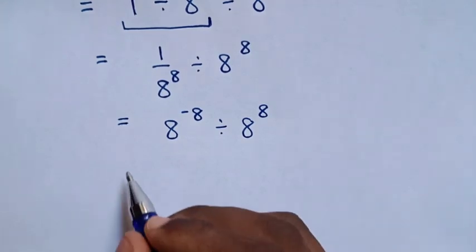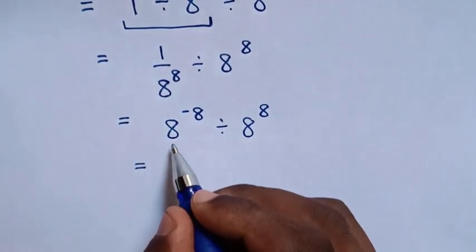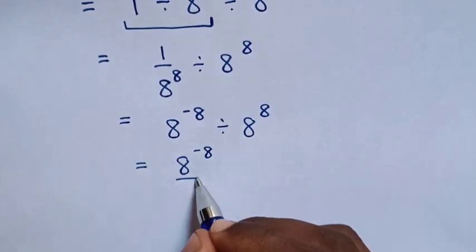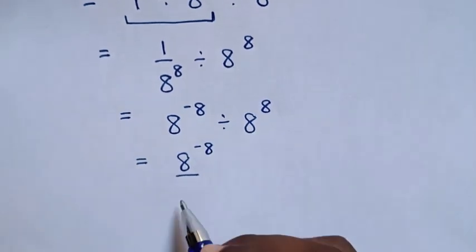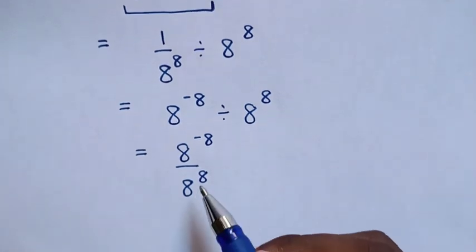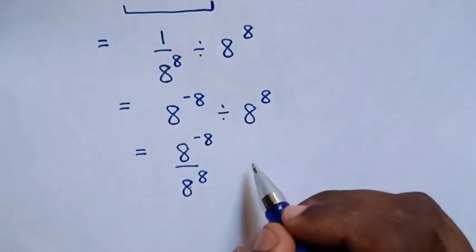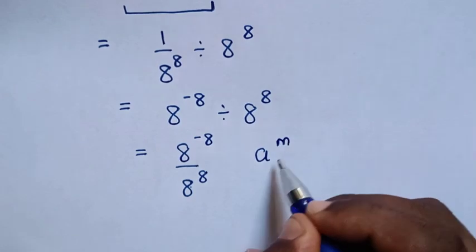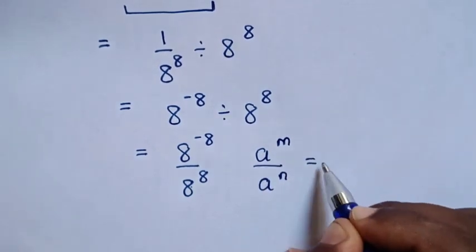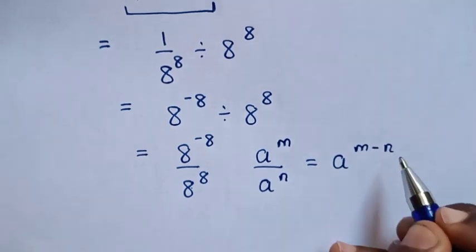Then it will be equal to: this divided by this is the same as 8 power of negative 8 over 8 power of 8. Now, in here, division of exponent to its same base — so we'll apply the rule: a power of m over a power of n is equal to a power of m minus n.